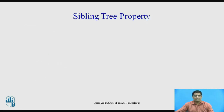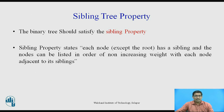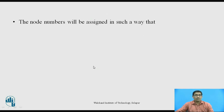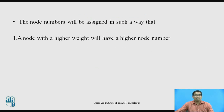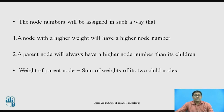Sibling tree property: the binary tree should satisfy the sibling property. The sibling property states each node except the root has a sibling, and the nodes can be listed in order of non-increasing weight with each node adjacent to its sibling. The node numbers will be assigned such that a node with a higher weight will have a higher node number, and a parent node will always have a higher node number than its children. Therefore, the weight of the parent node equals the sum of weights of its two child nodes.